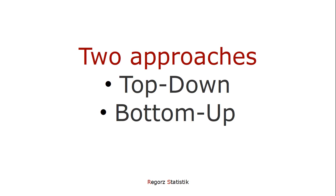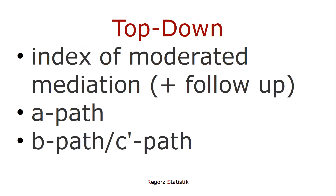To report a moderated mediation, there are two basic approaches: top-down or bottom-up. With top-down, we start with the end result — whether we have a moderated mediation or not — and then go into the components of the analysis. With bottom-up, we start with the components, that is the A path and the B and C' path, and look at the end result — the index of moderated mediation — as a last step. So top-down, we start with the index of moderated mediation, because that decides whether we do have a moderated mediation or not.